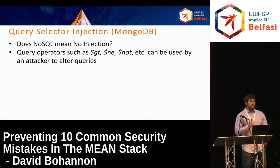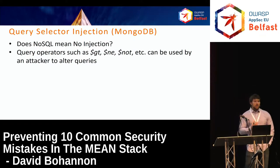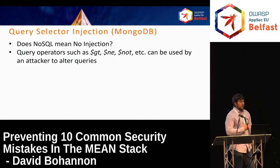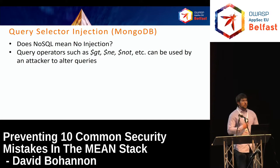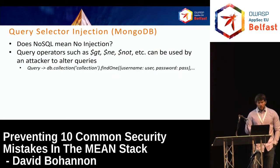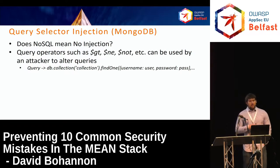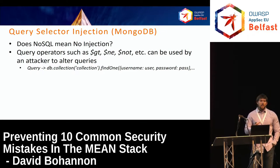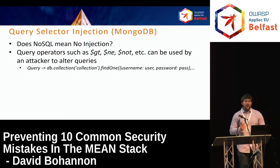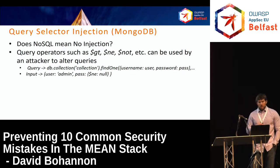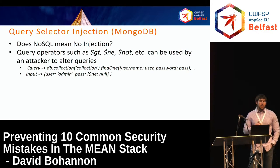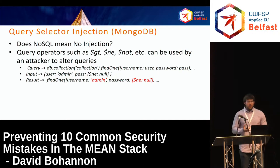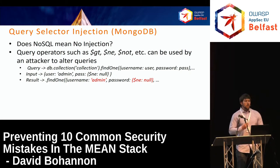MongoDB has a concept of query selector operators — operators that start with a dollar sign. Dollar-GT means greater than, dollar-NE for not equal to, and dollar-NOT for negation. If an attacker can inject these query selector operators into the query, they can alter the logic of that query. For example, consider a findOne query looking up a username matching a variable 'user' and a password matching a variable 'pass' — part of an authentication flow.